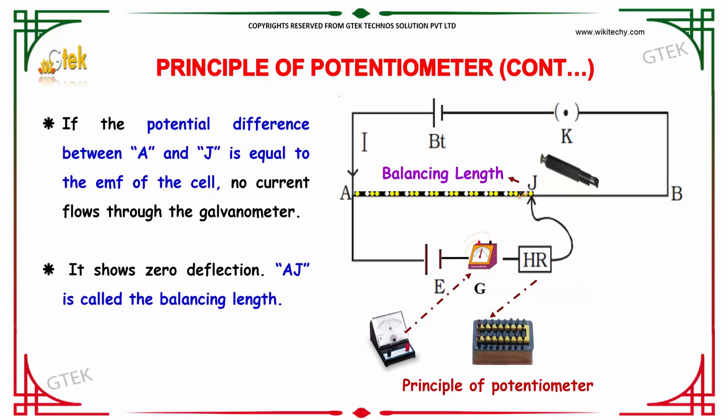If the potential difference between A and J is equal to the EMF of the cell, no current flows through the galvanometer. It shows a zero deflection. AJ is considered as the balancing length at zero.